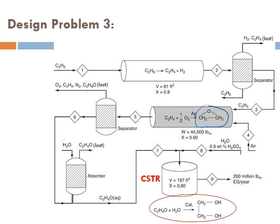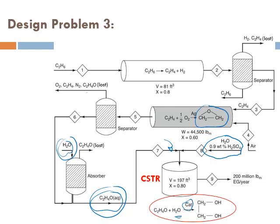We're going to wash and hydrolyze the ethylene oxide with water — adding water to it in an absorber to form an aqueous solution of ethylene oxide. Then we add this stream along with another stream containing more water, but this time with the catalyst H₂SO₄. The ethylene oxide is then hydrolyzed by reacting with water in the presence of the catalyst.